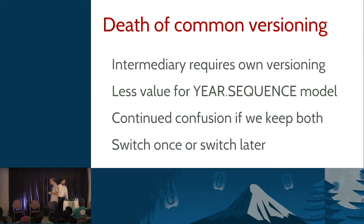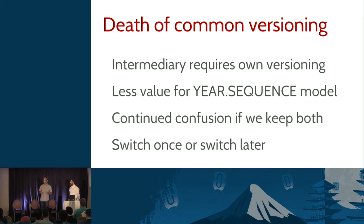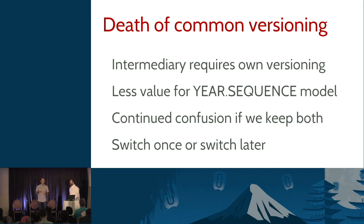The problem with intermediary versioning is that you cannot have a common version if everyone is on a different release schedule with different version numbers - intermediary kind of requires its own versioning. We still had a lot of projects using the year.sequence model, but we expected more projects during the Liberty cycle to switch to an intermediary release model. That creates confusion for users as they see things released with a common version number and things released with a specific version number - they start asking 'is it part of the release, is it really Liberty if it's version 2.5.0?'